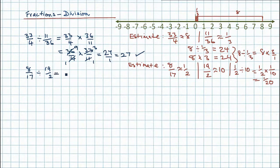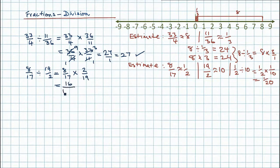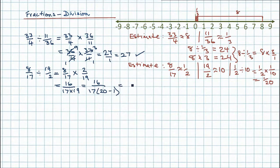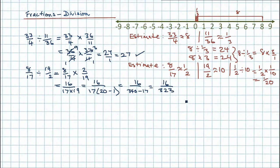So 8 divided by 17 is our dividend — we simply write that out again. But now we change our divisor into a multiplier by inverting the fraction, so we've got 2 19ths. I can see there's no cancellation possible here, so I'm just going to multiply across: 2 times 8 is 16, divided by 17 times 19. 17 times 19 — if I think of it as 17 times (20 minus 1) — becomes much easier: 17 times 20 is 340, minus 17 is 323. So the answer is 16 divided by 323.